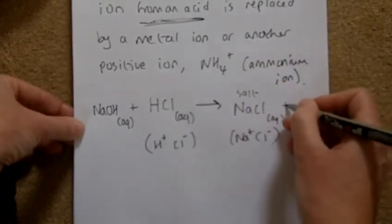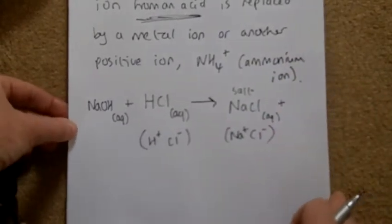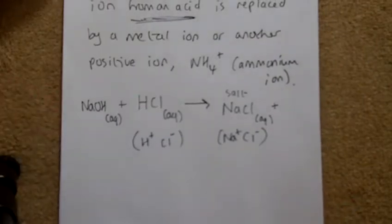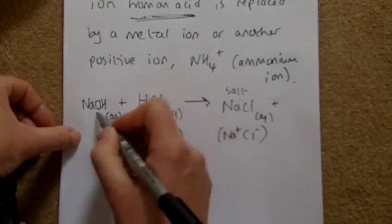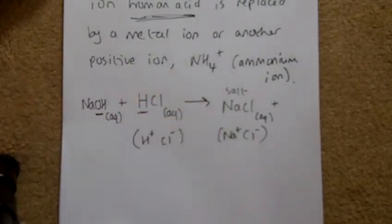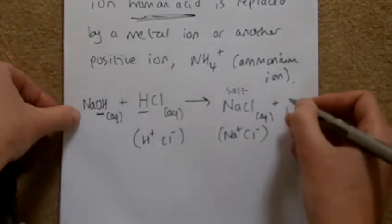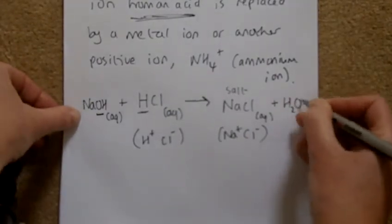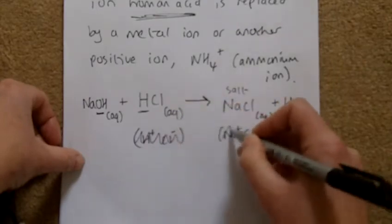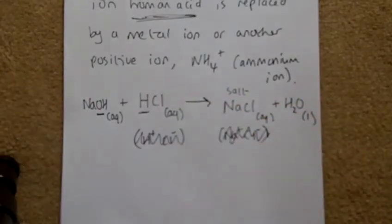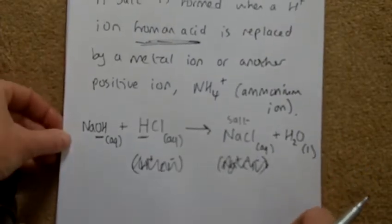To balance the equation we need something else. What's left over? We have the H and the OH — put them together and we have water. That gives a balanced chemical equation, with liquid water as a product. The earlier working was just to help with the working out. That's the balanced chemical equation to form a salt — the H+ ion from the acid has been replaced with a metal ion.